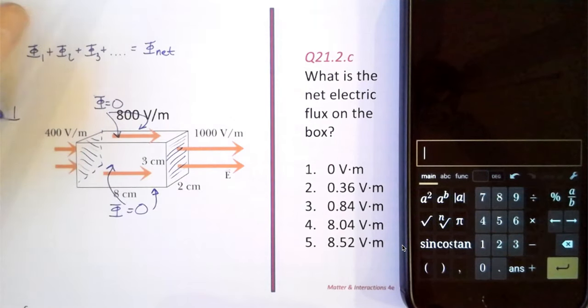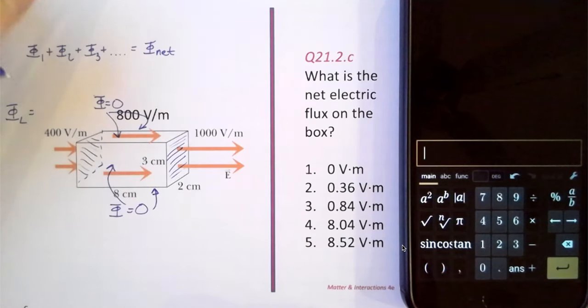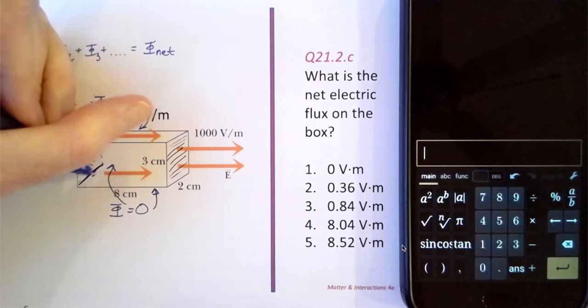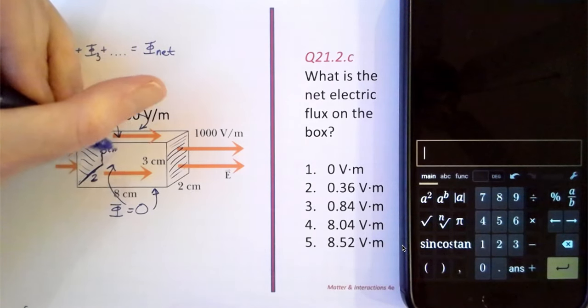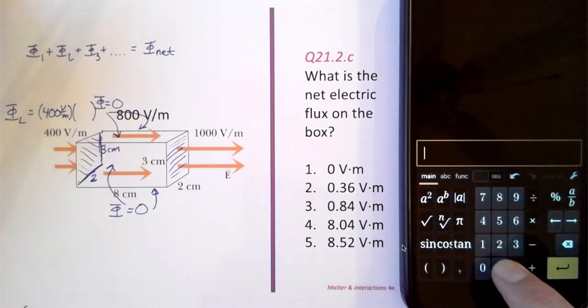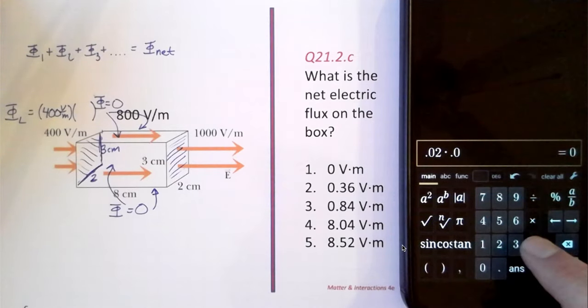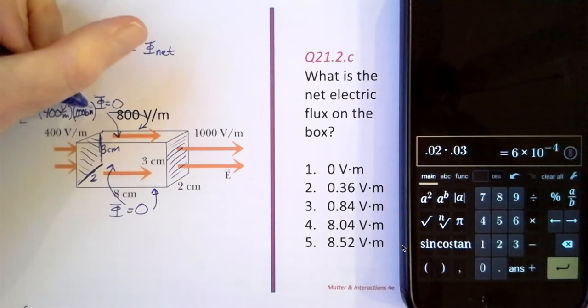So on the left end of the box, the flux is going to be the electric field times the area. The electric field is 400 volts per meter. And the area is going to be, let's see, this side right here is 2 centimeters and this side right here is 3 centimeters. So that is going to be, let's double check, 0.02 times 0.03, 0.0006 square meters.